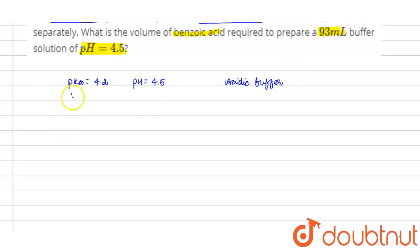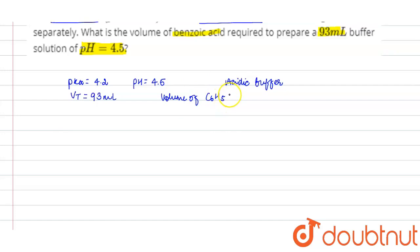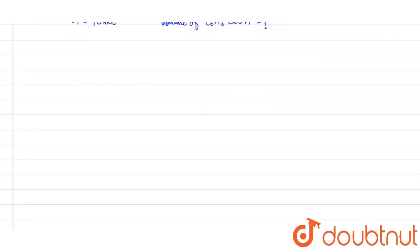The total volume of the acidic buffer given in the question is 93 mL. We need to find the volume of benzoic acid, that is, the volume of C₆H₅COOH.